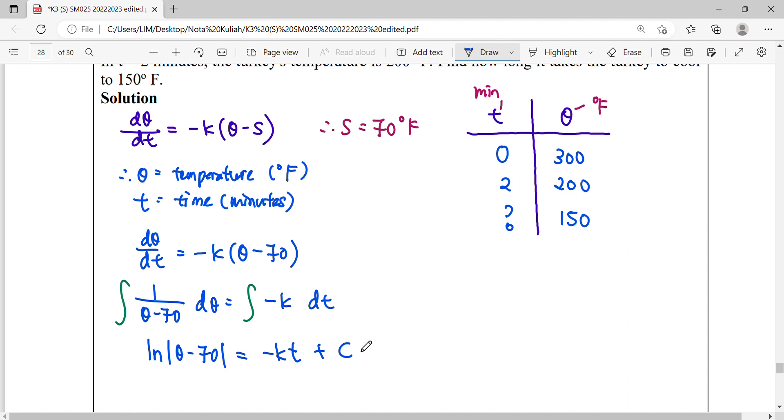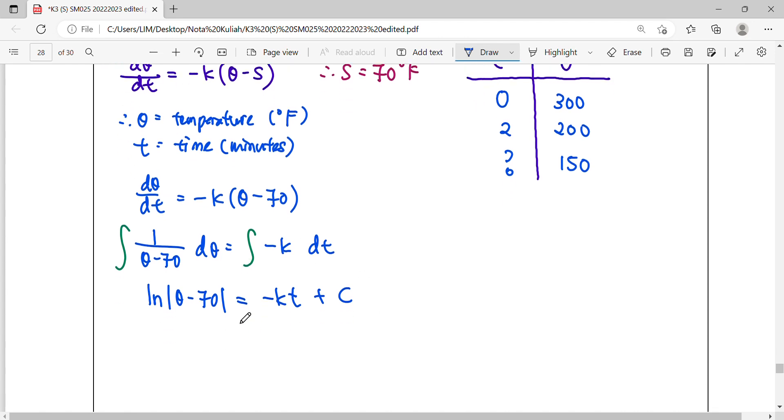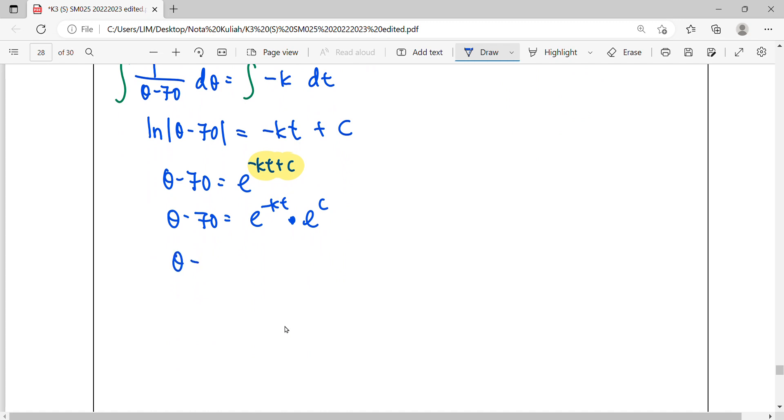To solve this differential equation, express it in general form with theta as the subject. Unlock this by taking e to both sides; everything becomes a power. Simplify the power: when you have something plus something, this becomes e^(-kt) multiplied with e^C. Since e is constant and C is constant, simplify as constant A.